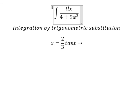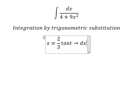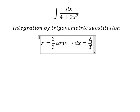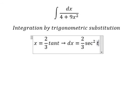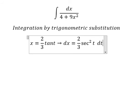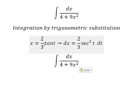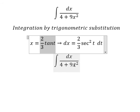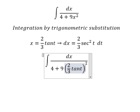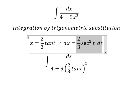And then we simplify dx. dx, we have 2 over 3 secant² t dt. So I will put this one in here. dx, we change by this one.